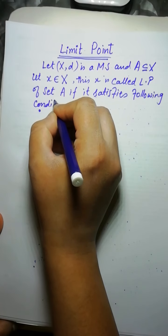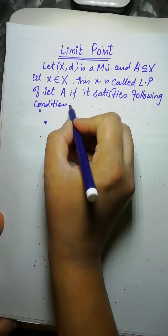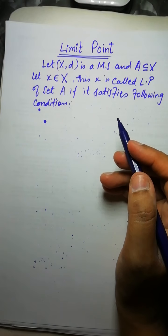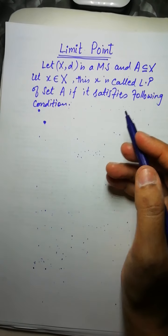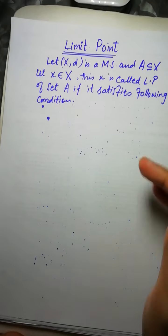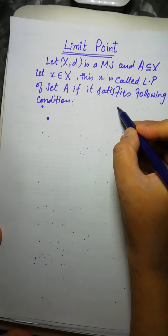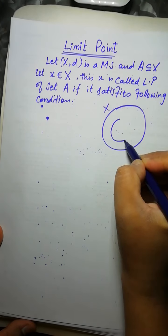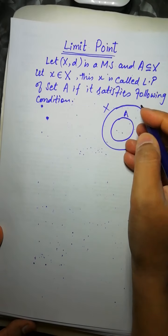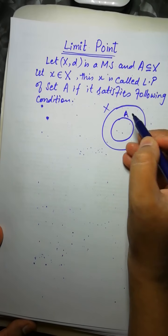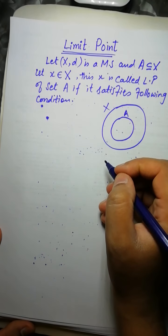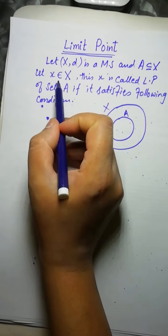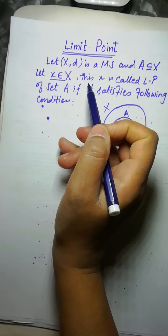Let's understand this condition. To find a limit point, you need a metric space. For example, you have a metric space and you have selected a set A. Now you have selected one point x in the metric space.